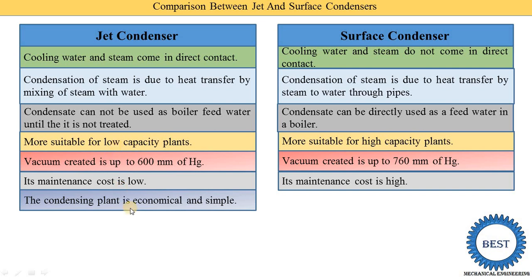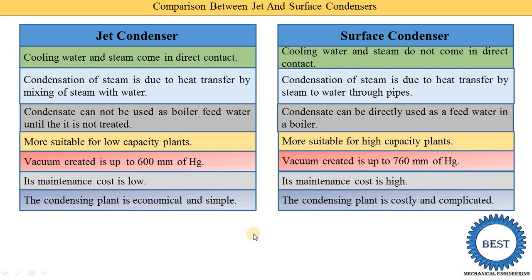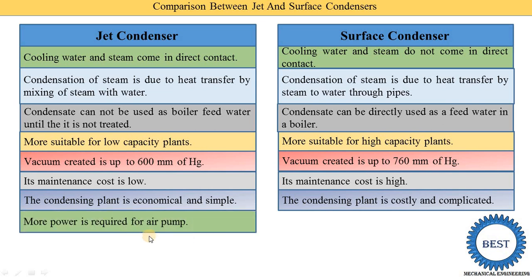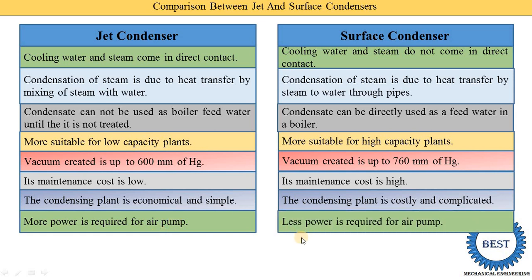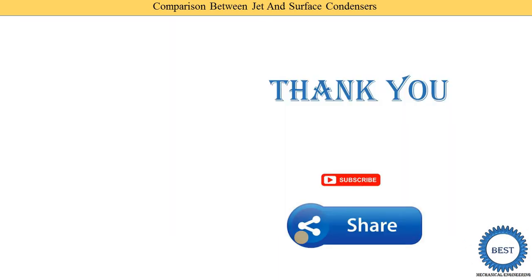A jet condenser is economical and simple. A surface condenser's condensing plant is costly and complicated. In a jet condenser, more power is required for the air pump. In a surface condenser, less power is required for the air pump.